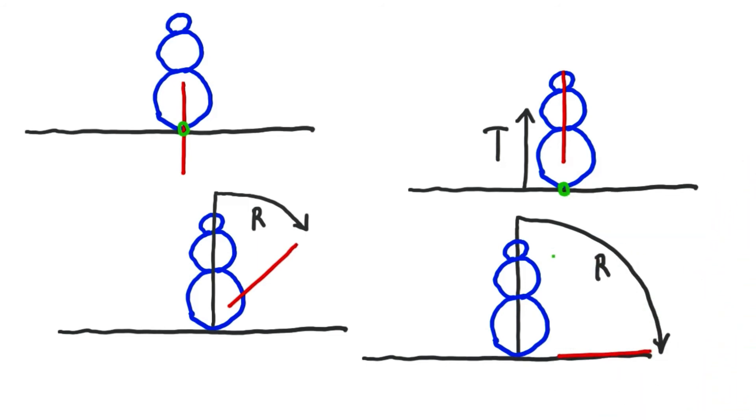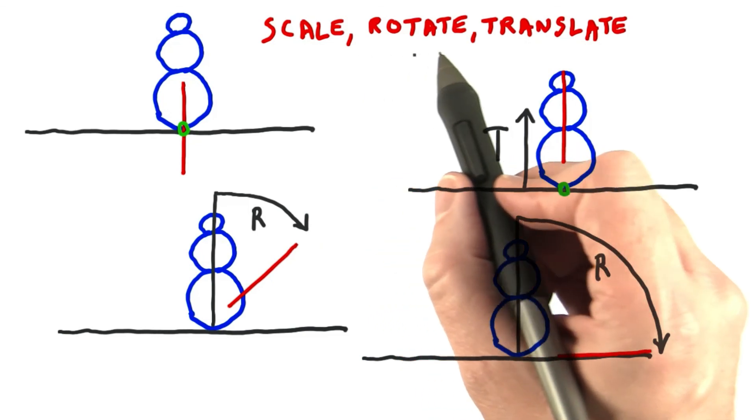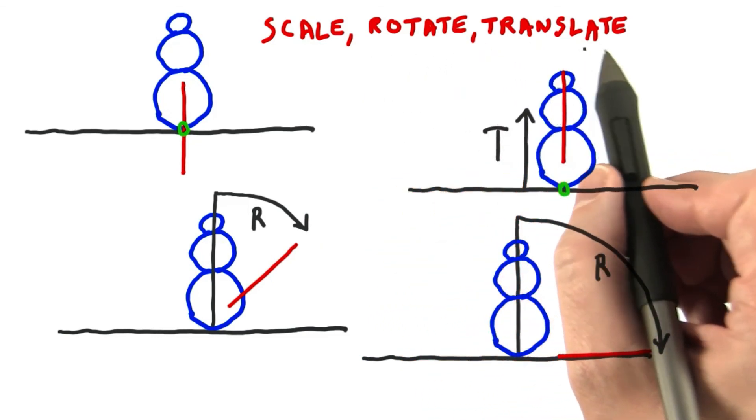We've established that scaling before rotating is usually what we want, and rotating before translating is also generally more useful. This is why 3.js uses this order: scale, rotate, translate when dealing with a single object.